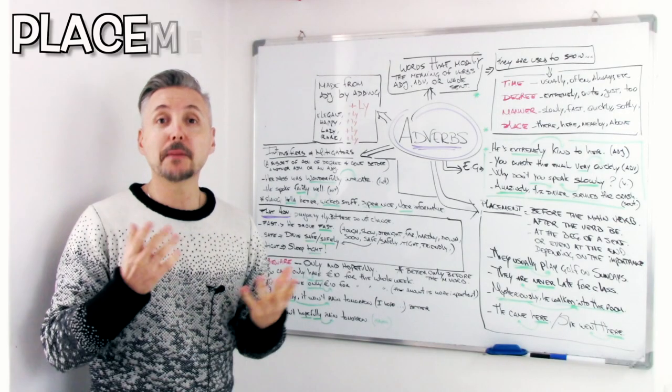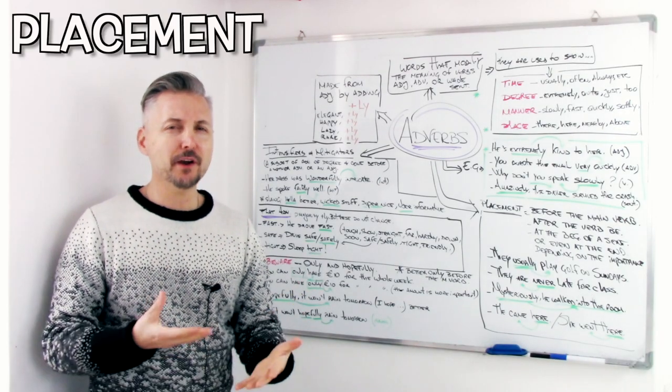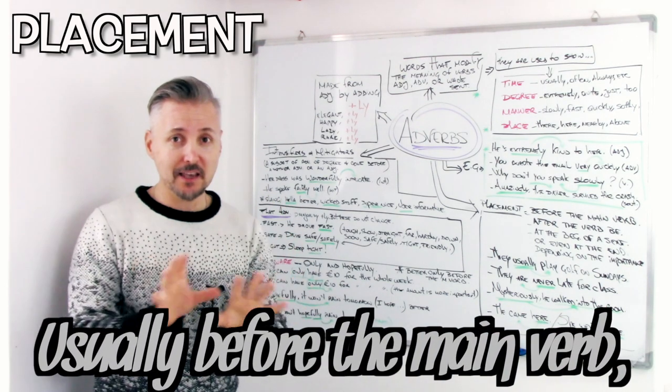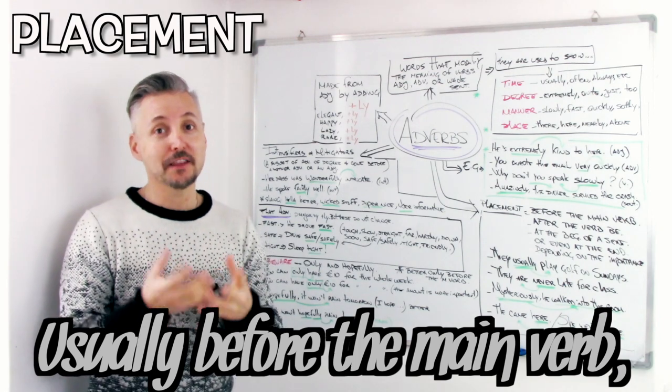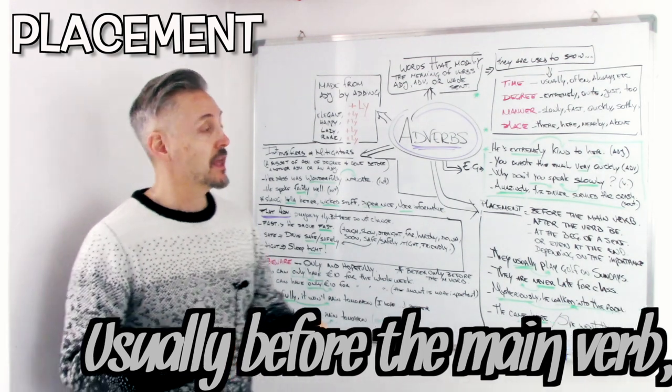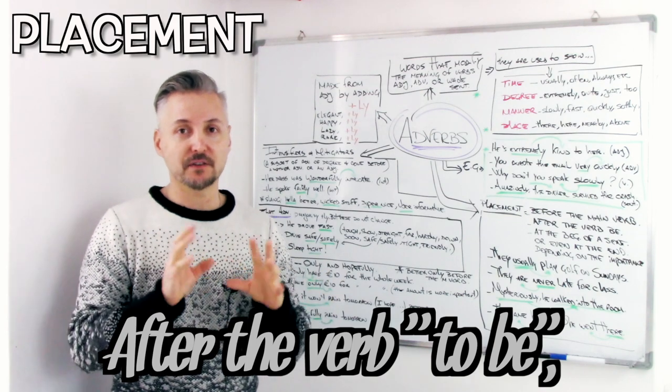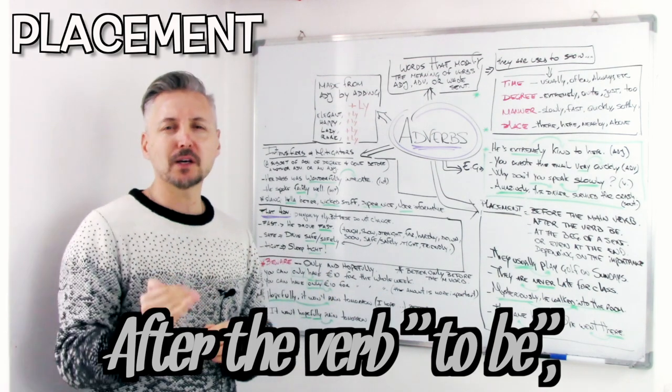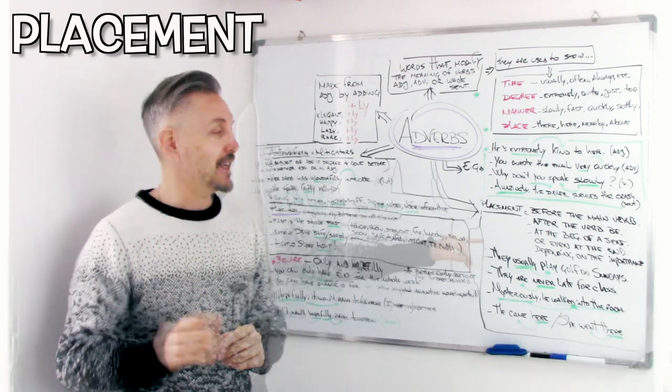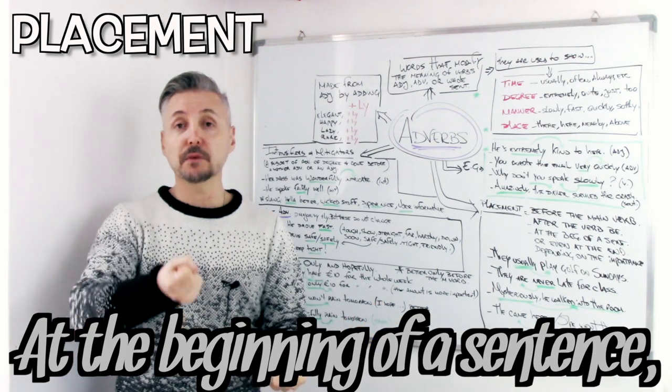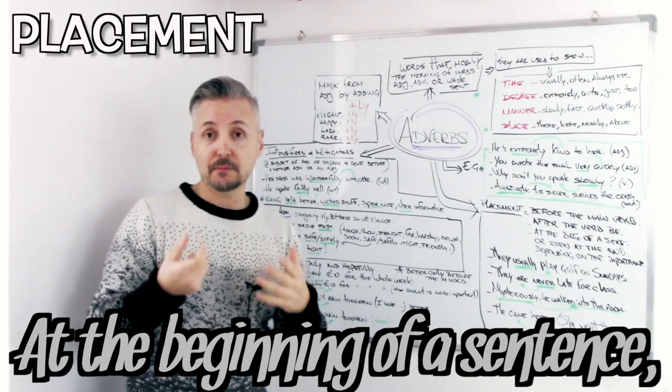As promised, placement. Where does an adverb go? Well, usually, and I'm saying here usually, before the main verb, right? After the verb to be. You know, the verb to be is very special, right? So it goes after, usually. At the beginning of a sentence. If you want to modify the whole sentence, it would be at the beginning, like I said before.